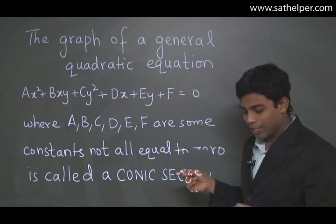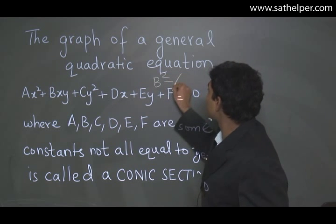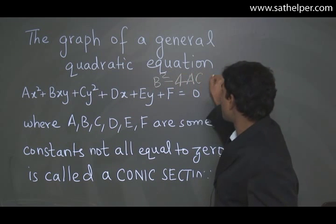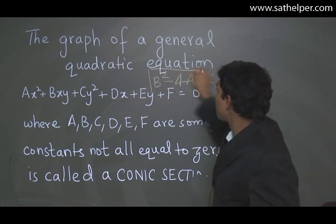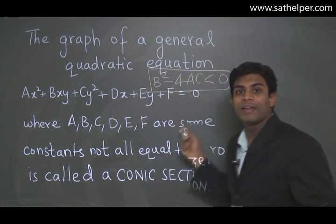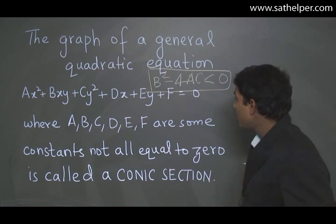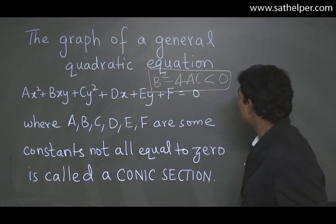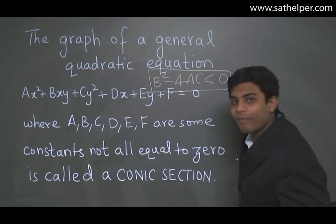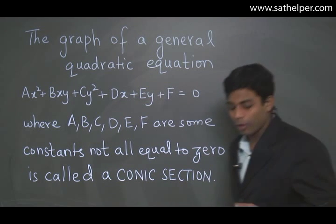So last time we saw that if the condition B² minus 4 times A, C was less than 0, then if this was true, then we saw that it's an ellipse or a circle. Right? This time, if this is not true, if B² minus 4AC is either greater than 0 or equal to 0, then what we get is a parabola or a hyperbola.